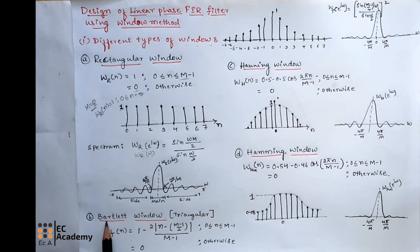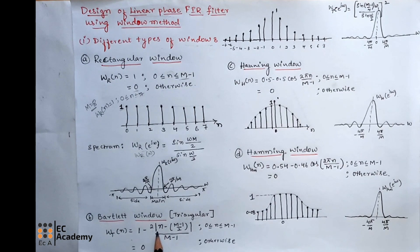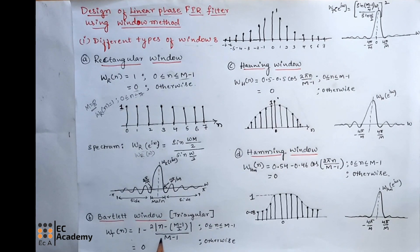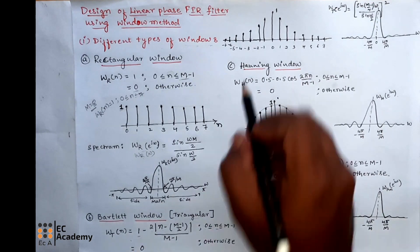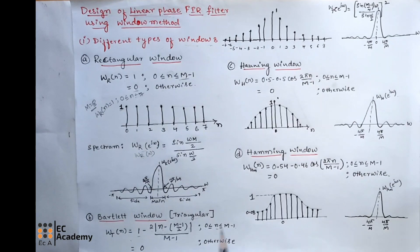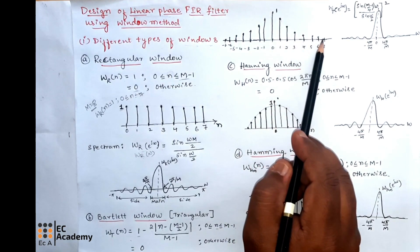The next type of window is the Bartlett window, also known as the triangular window. Mathematically, Wt(N) = 1 − (2|N − (M−1)/2|) / (M−1) for N ranging from 0 to M minus 1, and 0 for other values of N. If you put N equal to 0, this term becomes 0 and we get Wt(N) = 1. So at N = 0, the amplitude is 1. As we give different values of N, the sample decreases gradually, as seen in the time domain representation.